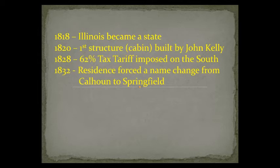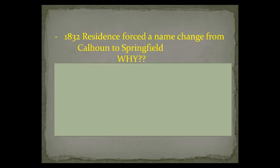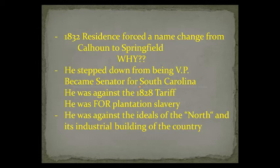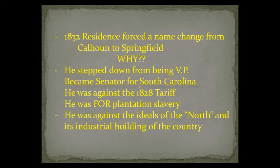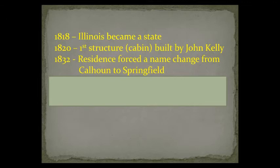The city residents changed their name from Calhoun because it was named after Senator Calhoun. So why did they change it? He stepped down from being vice president and became a senator again for the state of South Carolina. He was against that tariff of 1828, and he was for plantation slavery. He was against the ideals of the North and the industrial building of this country. And that's why they said, we don't associate with that guy anymore — we're in Illinois, we're changing our name.